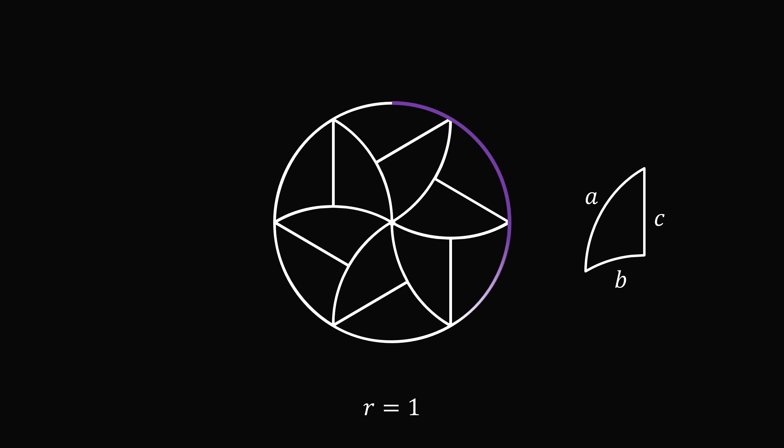The circumference of a circle with the radius equal to 1 is equal to 2π. But we also know the circumference of the circle is equal to 6a. Therefore, 6a is equal to 2π, which means a is equal to 2π over 6.